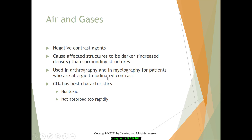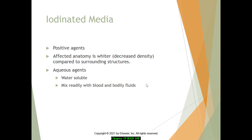For certain exams such as arthrograms and myelograms, we need to find out if patients have an allergy to iodinated contrast material. With iodinated media — positive agents used mostly for organs and blood vessels — the x-ray absorption characteristics are similar to soft tissue, but they cause radiographic images to have a distinct look, making structures visible that you normally wouldn't see. For example, with the kidneys, inserting contrast media causes those tissues to light up so you can see the kidney structures.